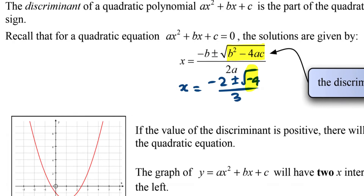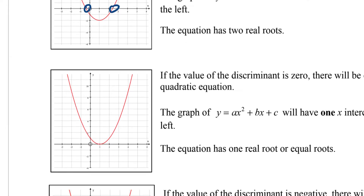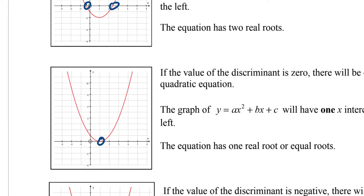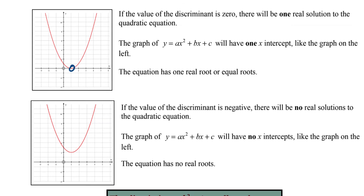It's important to know what this looks like graphically. If the discriminant is greater than zero, you get two solutions, and the graph goes through two points on the x-axis. If the discriminant is equal to zero, only one point. And if the discriminant is less than zero, there are no points where that quadratic goes through the x-axis.